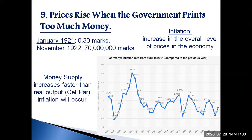If the money supply increases faster than real output, then ceteris paribus, inflation will occur. If a country prints money and causes inflation, then ceteris paribus, the currency will devalue against other currencies. For example, the hyperinflation in Germany of 1922–23 caused the German Deutsche Mark to devalue against currencies that didn't have inflation, because with the German currency buying fewer goods, you need more Deutsche Marks to buy the same quantity of US goods.